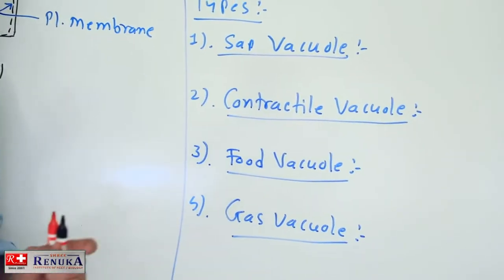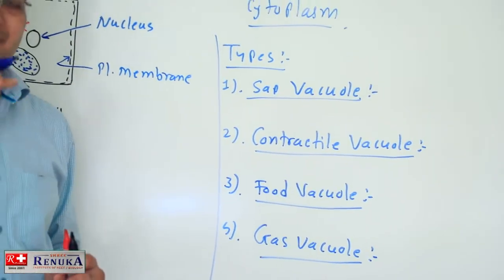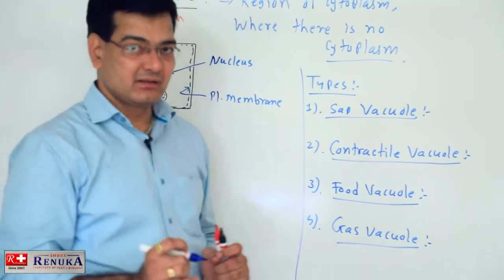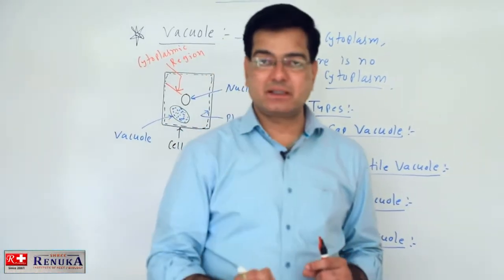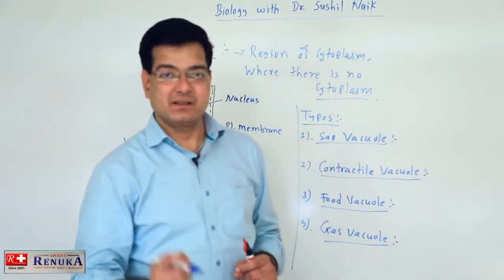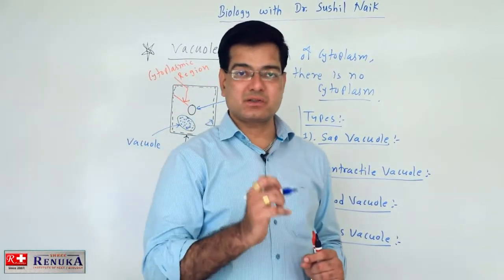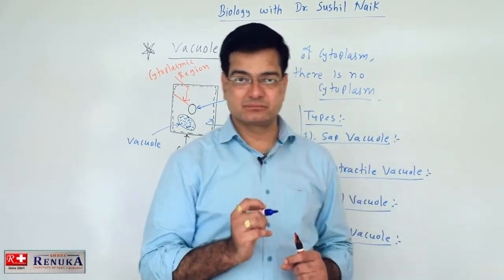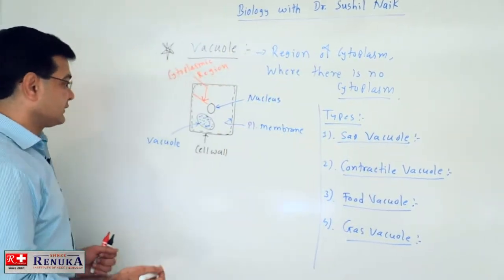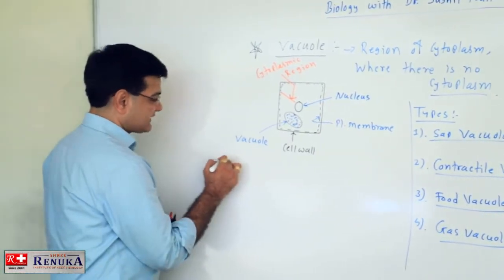Sap vacuole is basically found in all plant cells. In fact, the cytoplasmic concentration of the plant cell is mainly due to the presence of sap vacuole. This vacuole contains a vacuolar sap.